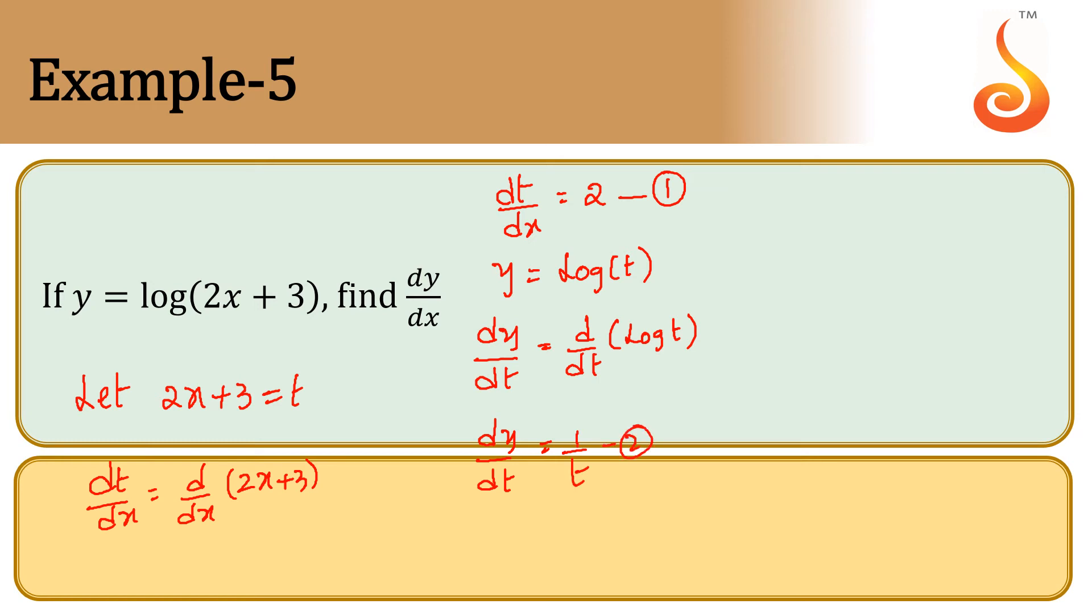We got dt/dx and dy/dt. We want dy/dx. So dy/dx can be written as dy/dt times dt/dx, which equals 1/t times 2.